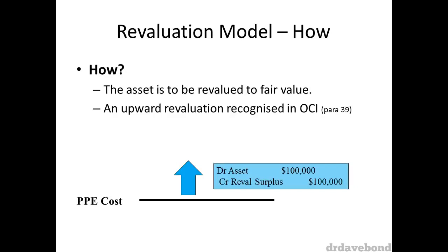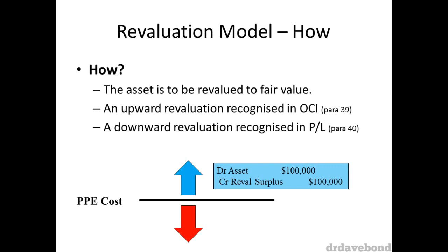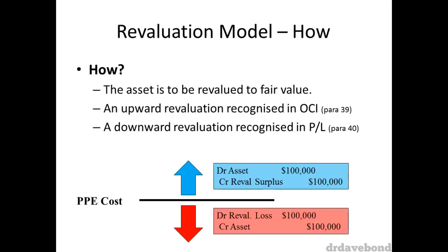If the asset's fair value is less than its current carrying value, it is a downwards revaluation. According to paragraph 40, this decrement — the difference between fair value and carrying value — is recognised in profit and loss. So the entry would be: debit revaluation loss, credit asset. Note the asymmetric treatment of upwards and downwards revaluations: upwards revaluations go to equity, whilst downwards revaluations go to profit.